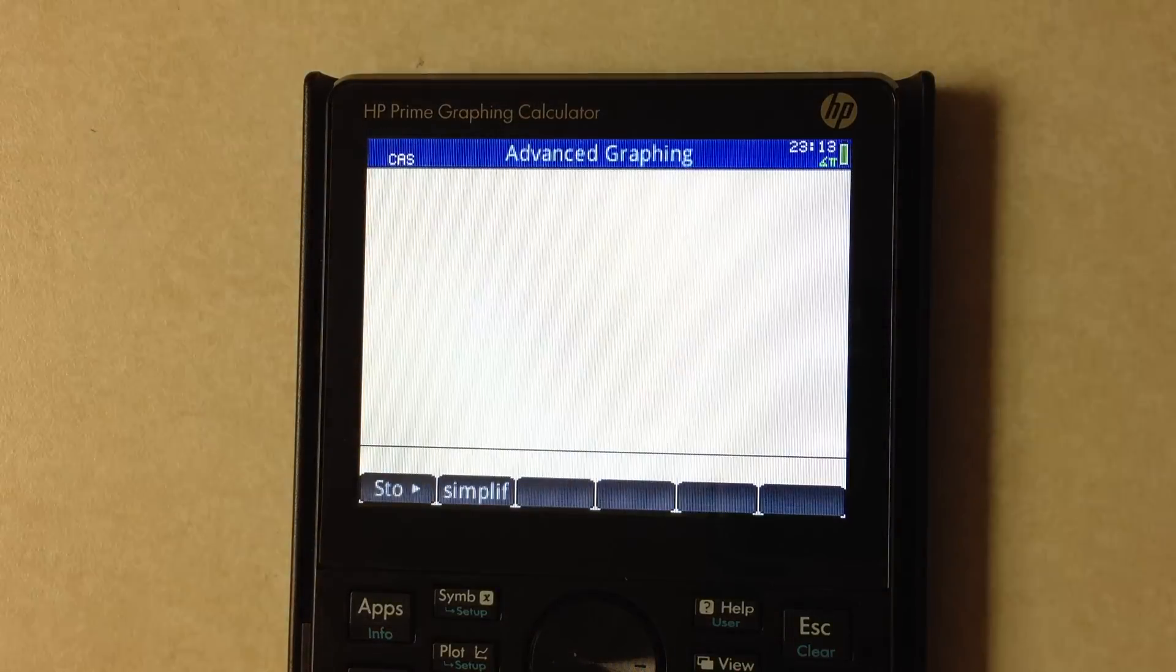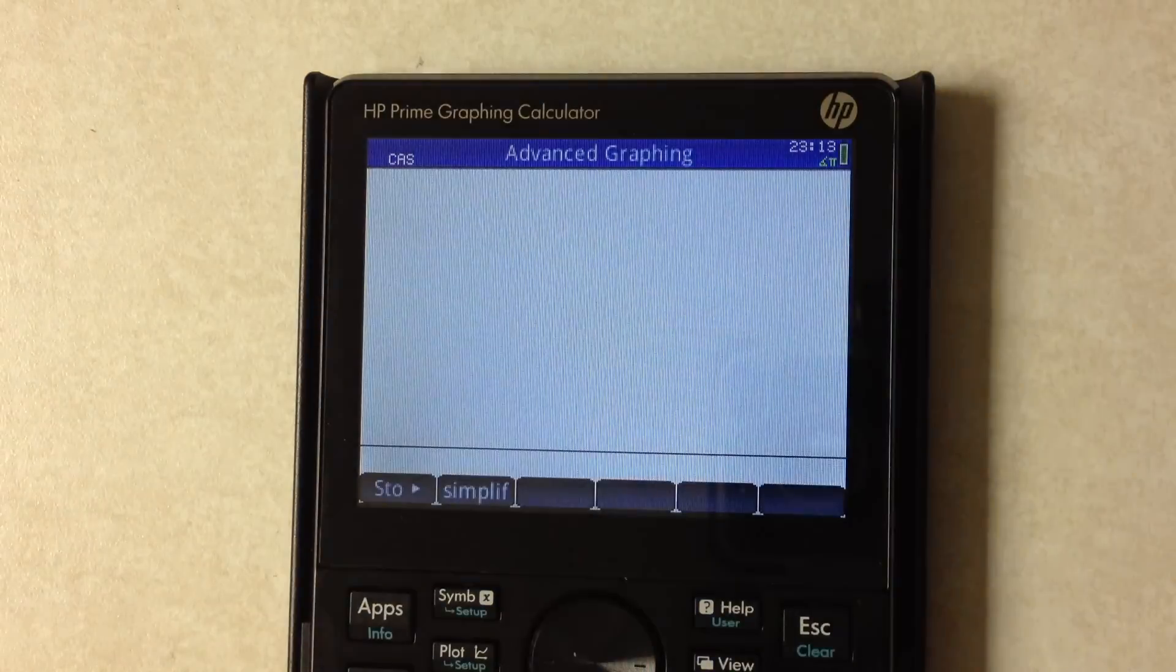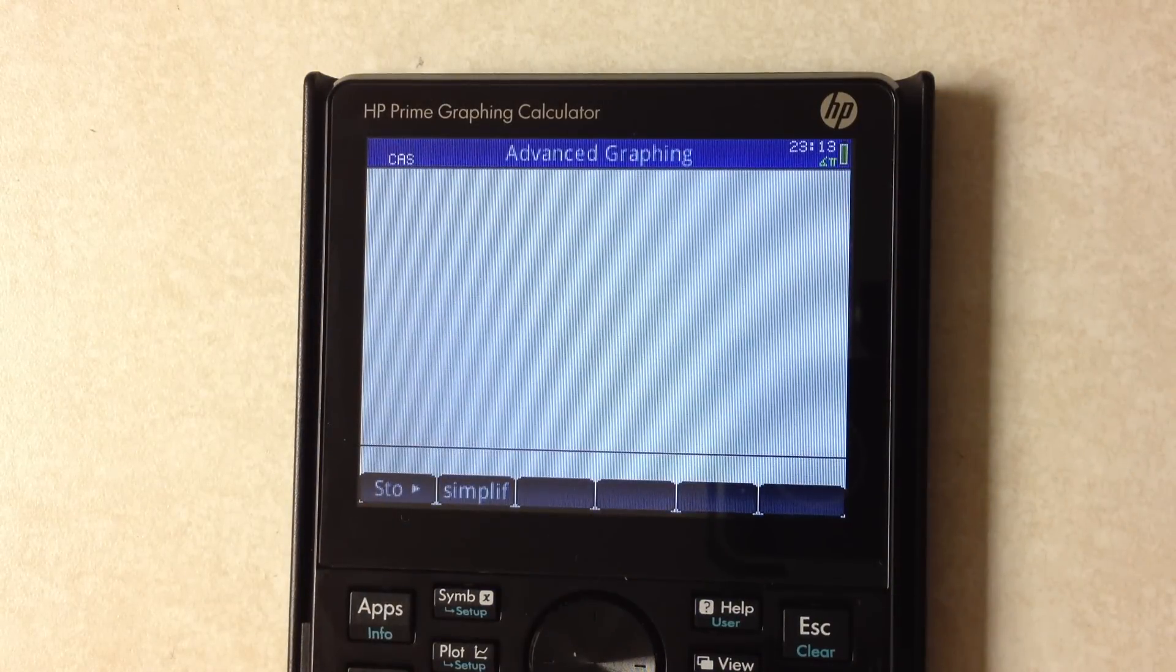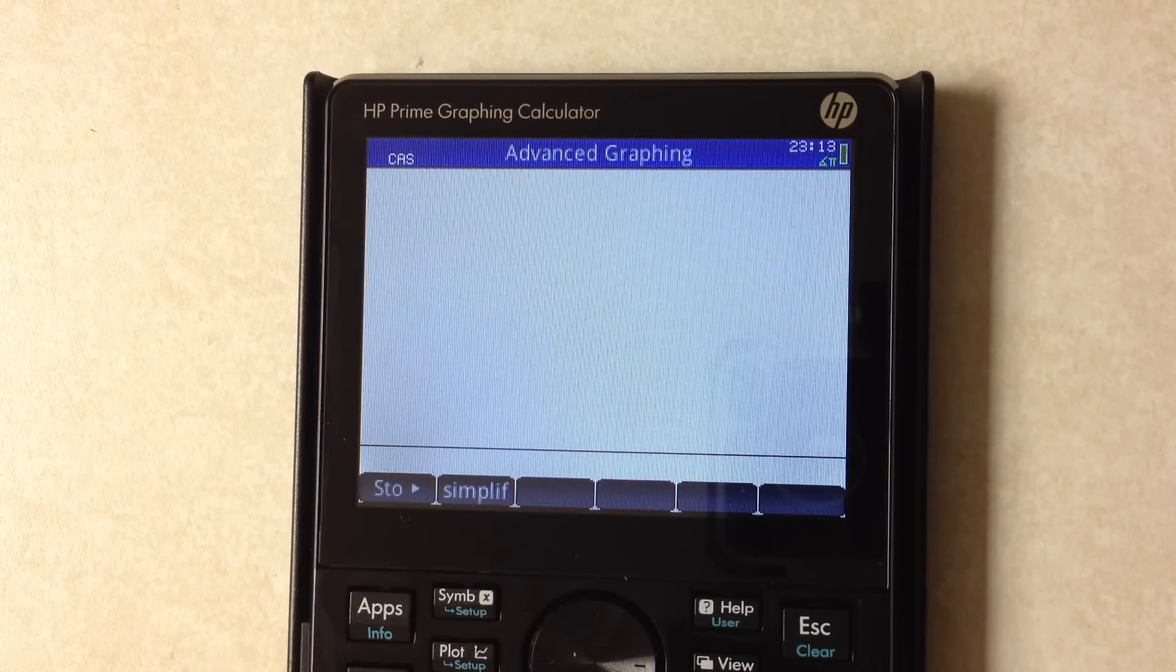You can change the brightness by holding on and pressing plus, or holding on and pressing minus. This is throwing back to the old days of holding on plus and on minus to change the contrast in the much older HP calculators.